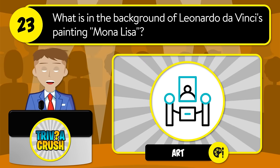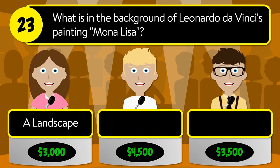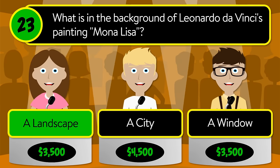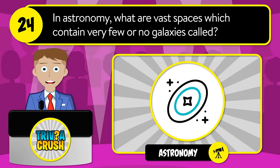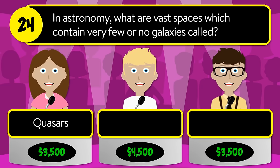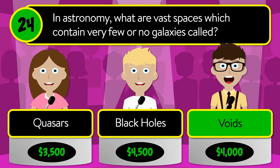Question number twenty-three: what is in the background of Leonardo da Vinci's painting Mona Lisa? Is it a landscape, a city, or a window? The correct answer is a landscape. Question number twenty-four: in astronomy, what are vast spaces which contain very few or no galaxies called? Is it quasars, black holes, or voids? The correct answer is voids.